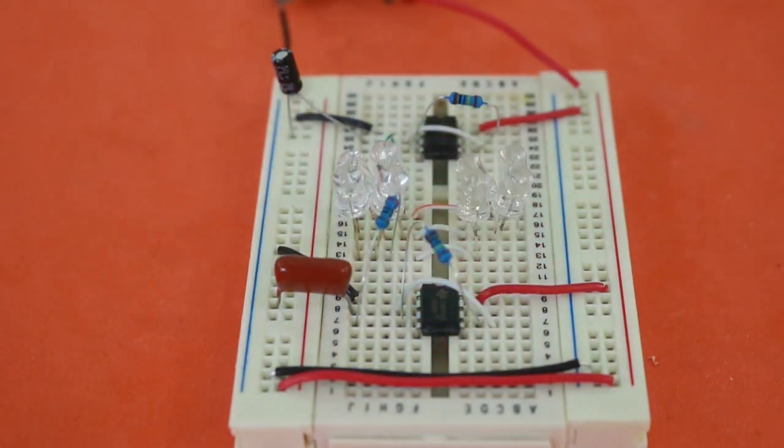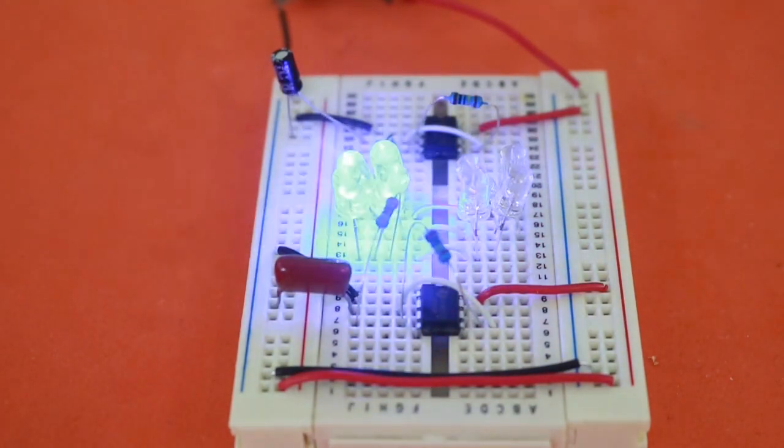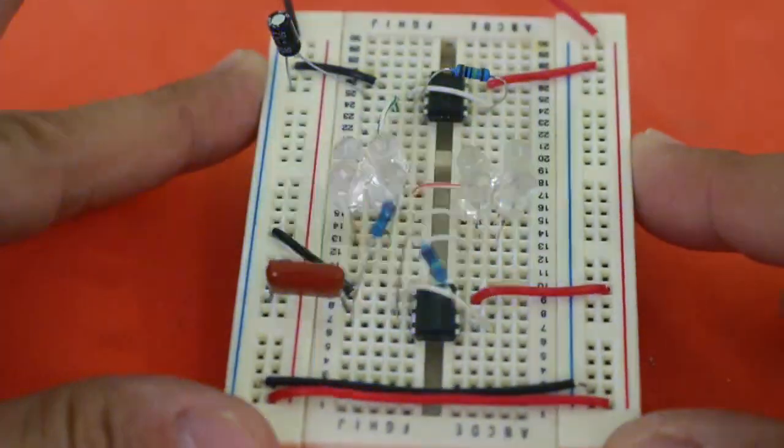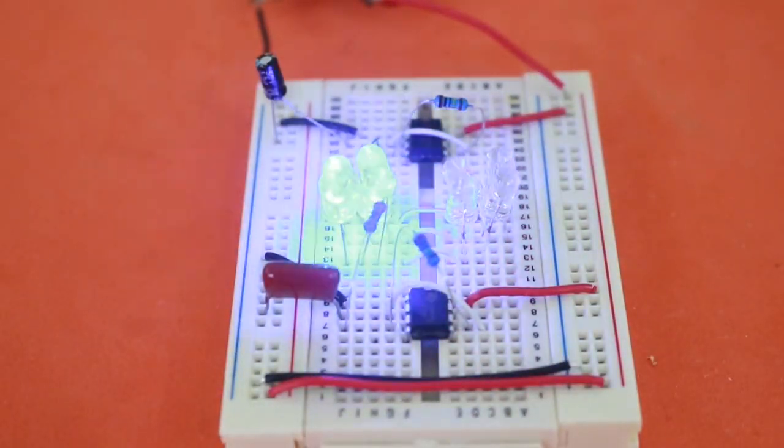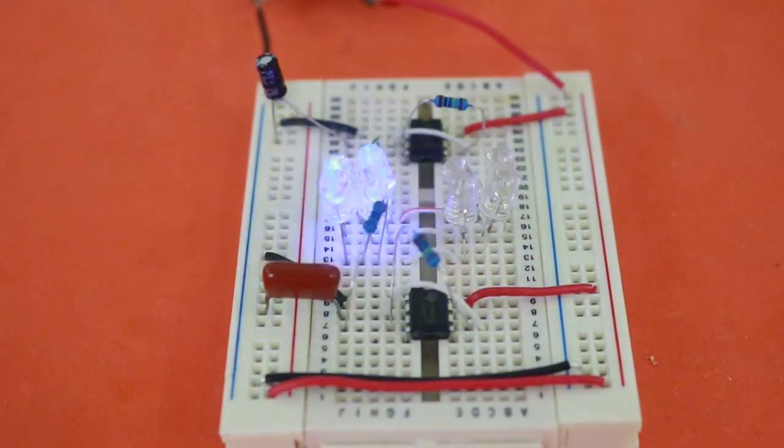Hello, welcome to Ludic Science. In this video I will show you how to make this simple circuit to alternate two sets of LEDs and have this police lights effect.